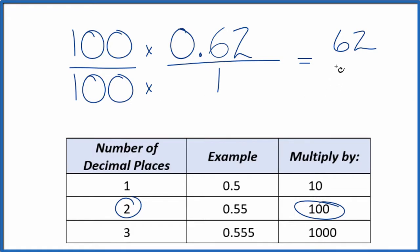So 100 times 1, that is 100. And we end up with 62 over 100 as our fraction for this decimal here, 0.62.